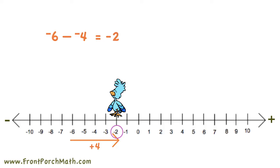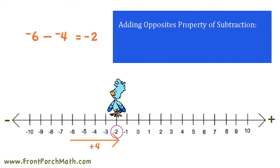Now let's try the problem again using our adding opposite property of subtraction, which says that subtracting a number is the same as adding its opposite.